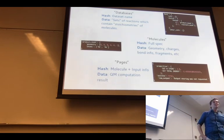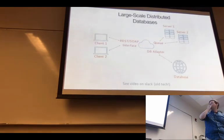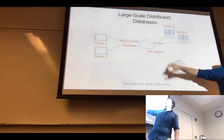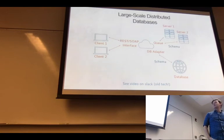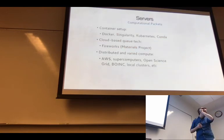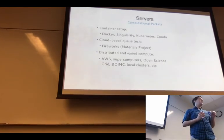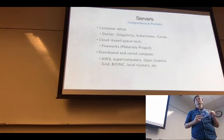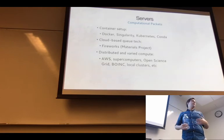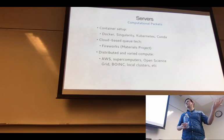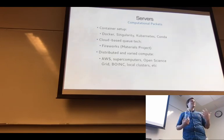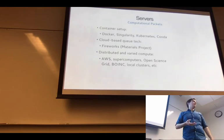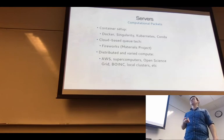You're going to have a lot of different compute requirements — you'll want to run on everything, anywhere you can get some time. Options include the Open Science Grid for high-throughput jobs, BOINC, your local clusters, supercomputers, and AWS. You kind of have too much compute that's too diverse. I'd recommend container setups — either Docker, Kubernetes, or Singularity depending on whether you're on a supercomputer. You can also do more permanent setups through something like Conda. Then you can marshal all this through cloud-based queuing tech — a good example is Fireworks from Materials Project.